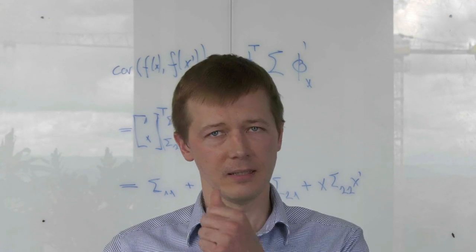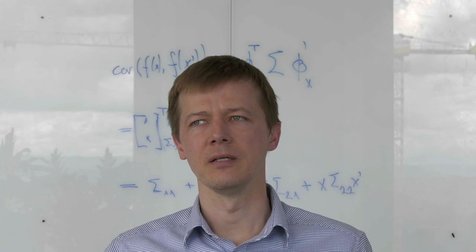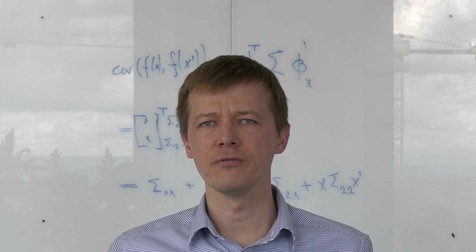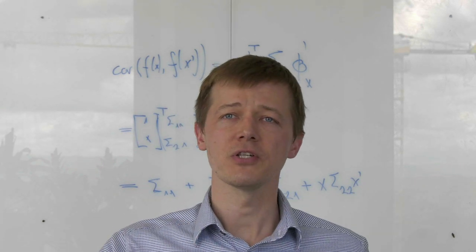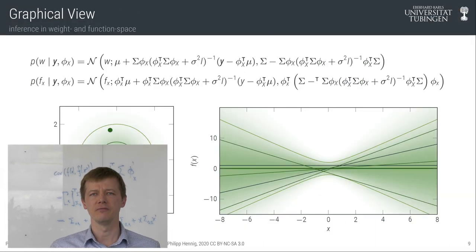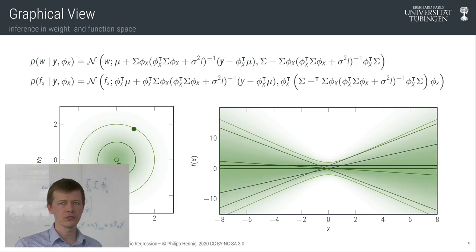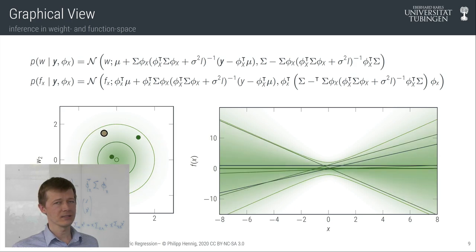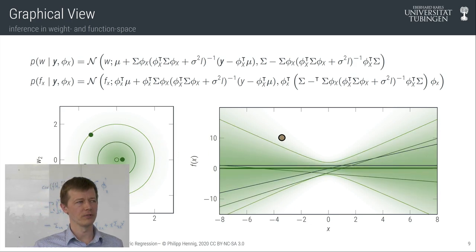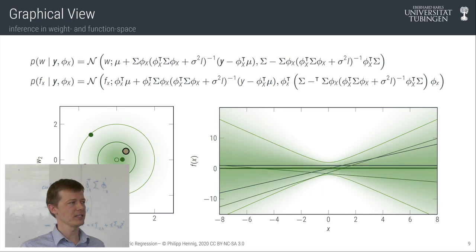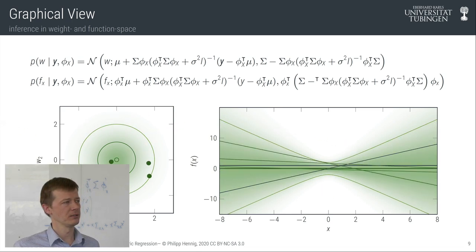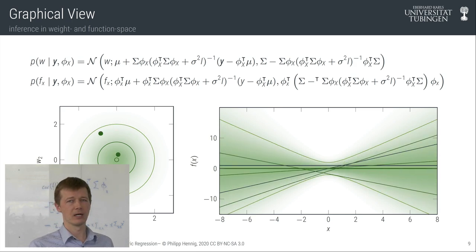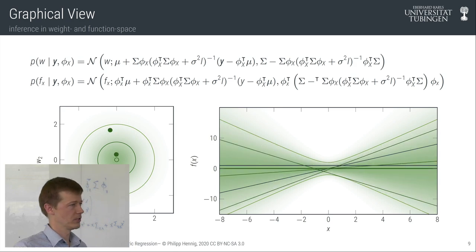We're now going to look at how this actually works in practice for our concrete data set. Not everyone likes looking at algebra in symbolic form, so let's do the same derivation again but in a more visual form. Here is our prior distribution again defined on a previous slide — a prior over the weights which directly corresponds to a prior over the functions. I'll call this weight space and function space, based on notions from the wonderful book by Carl Rasmussen and Chris Williams on Gaussian machine learning.